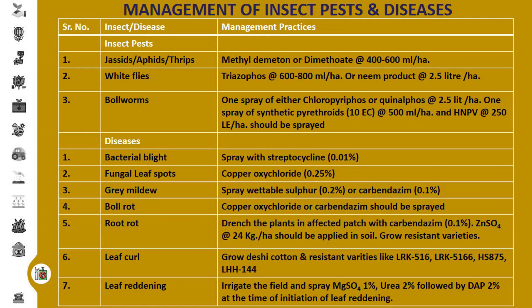To control root rot disease, drench the plants in affected patches with carbendazim at the rate of 0.1 percent, or carry out spraying of zinc sulfate. Foliar application of zinc sulfate at the rate of 24 kg per hectare and root rot resistant varieties should be used to avoid root rot attack. Another disease in cotton is leaf curl, which is controlled by cultivating desi cotton varieties resistant to leaf curl. These resistant varieties are LRK 516, LRK 5166, HS 875, and LHH 114. In case of leaf reddening, irrigate the field and spray magnesium sulfate at 1 percent, urea 2 percent, followed by DAP 2 percent at the time of initiation of leaf reddening.